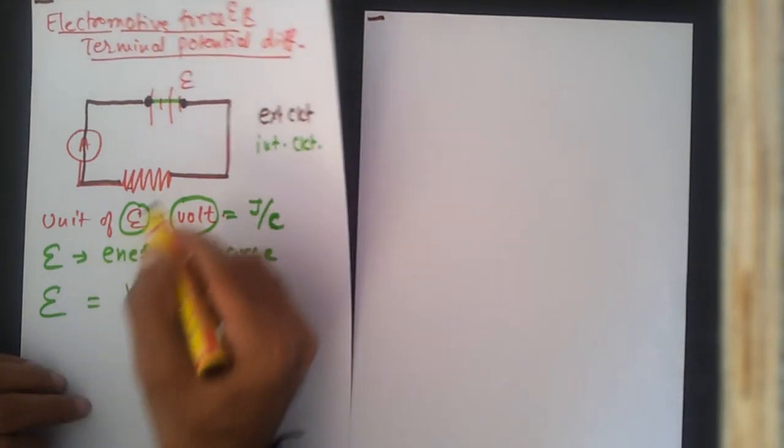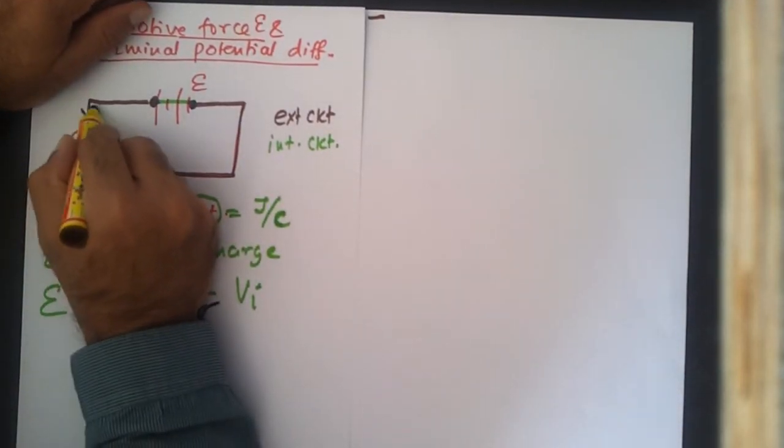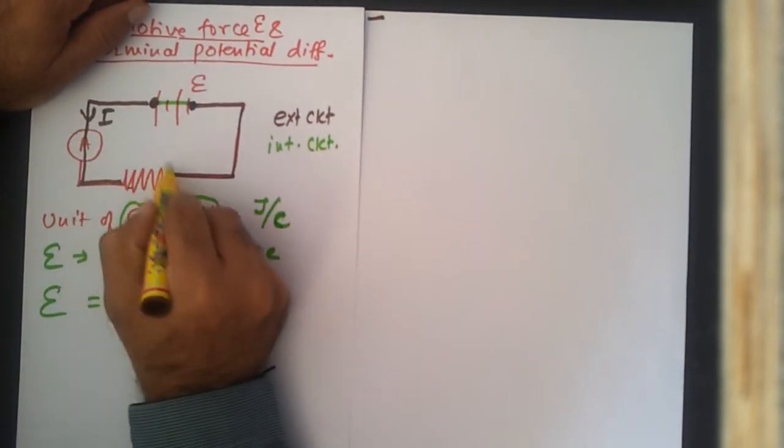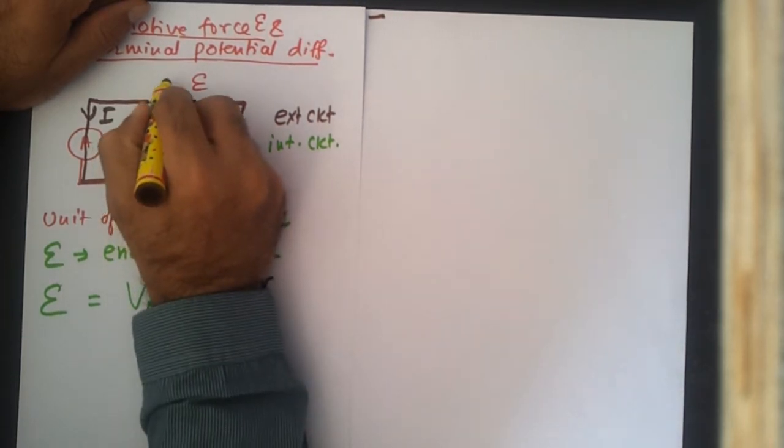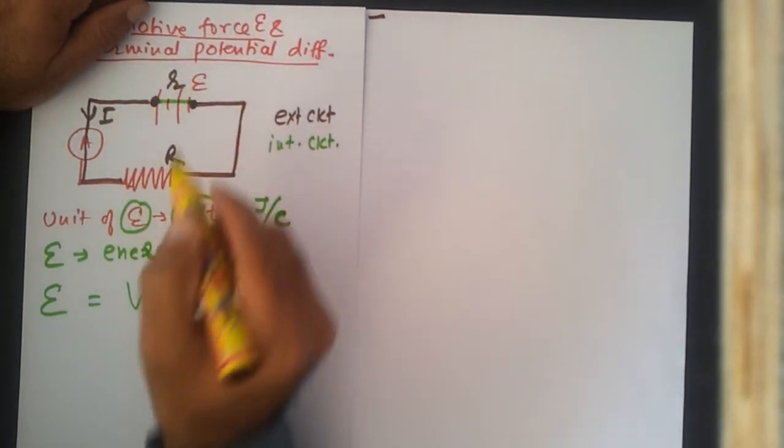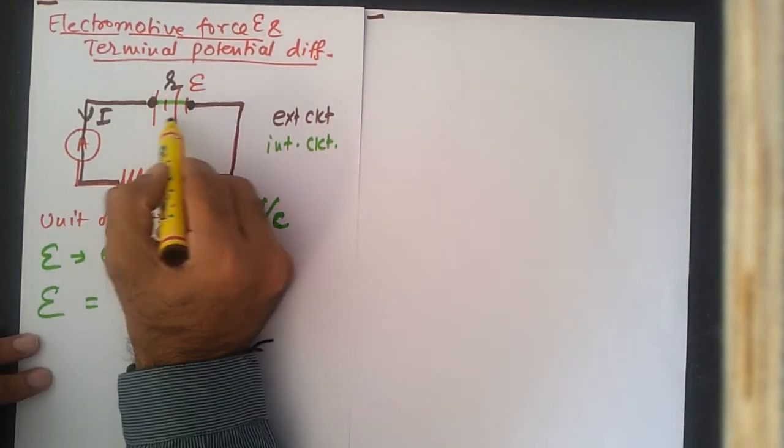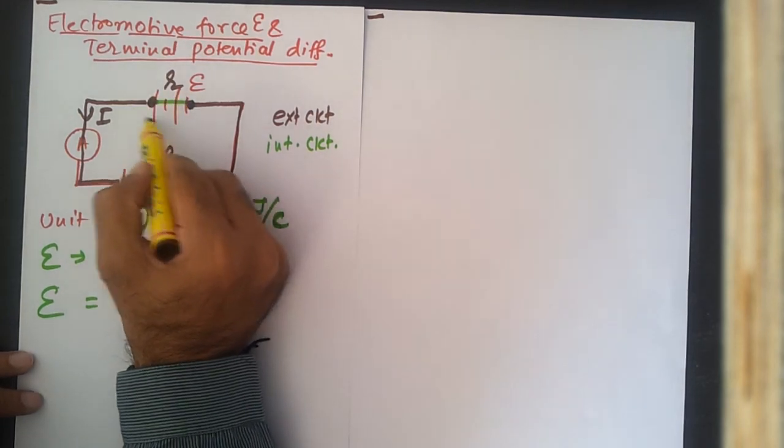Let us look further down. The current flowing in the circuit is I. The external resistance is R and internal resistance is small r. Internal resistance is the resistance that the current experiences within the cell. What will be the external energy VE? VE, as we know, is I into R. Capital I is the current flowing in the circuit and R stands for the total external resistance.